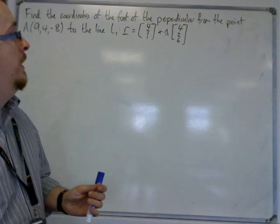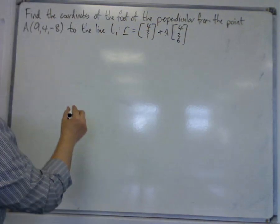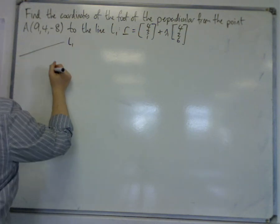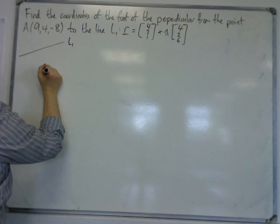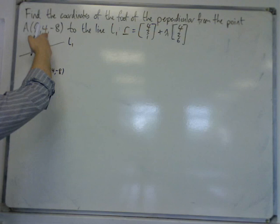So first of all, just to explain exactly what we mean by the foot of the perpendicular, let's say that this is my line L1, and this is the point A, 9, 4, minus 8, as it is in this question.